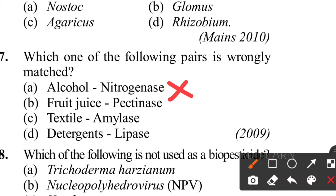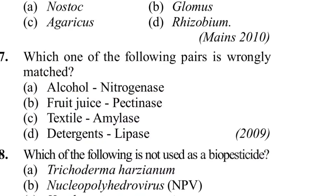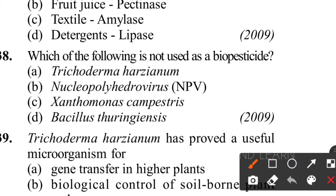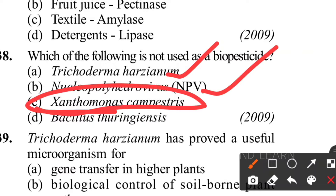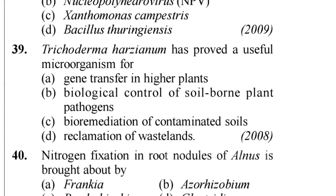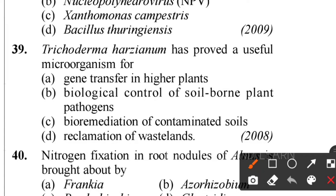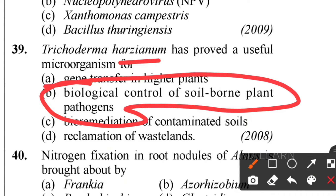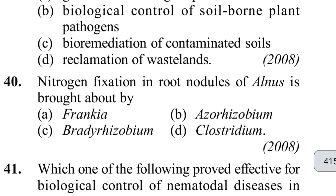Thirty-seventh question: which of the following pair is wrongly matched? Alcohol - nitrogenase - wrong, so option A is the correct answer. Fruit juice - pectinase and detergents are correct. Thirty-eighth question: which is not used as a biopesticide? Trichoderma harzianum and Nucleopolyhedrovirus are used as biopesticides, but Xanthomonas campestris is not used as a biopesticide. Thirty-ninth question: Trichoderma harzianum is a useful microorganism for biological control of soil-borne plant pathogens.